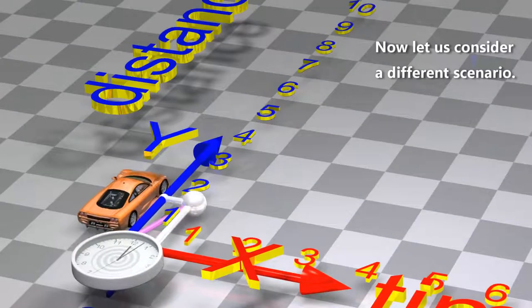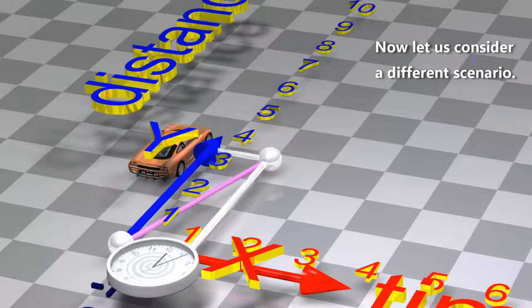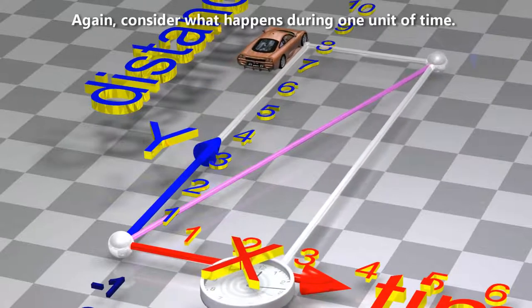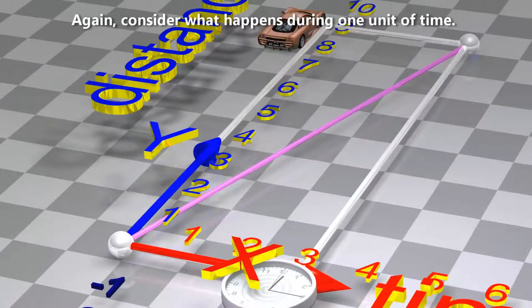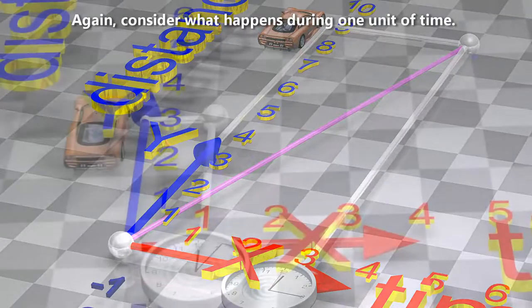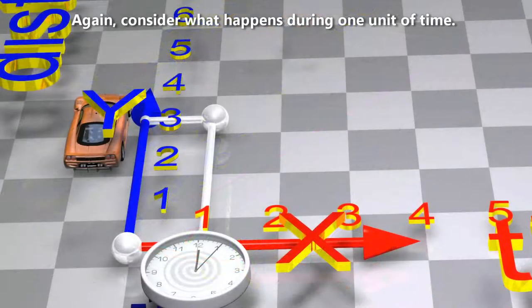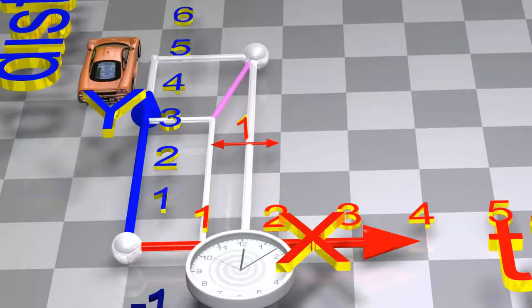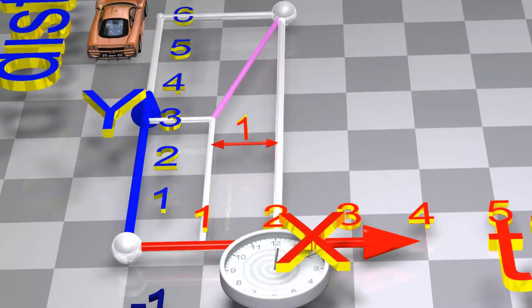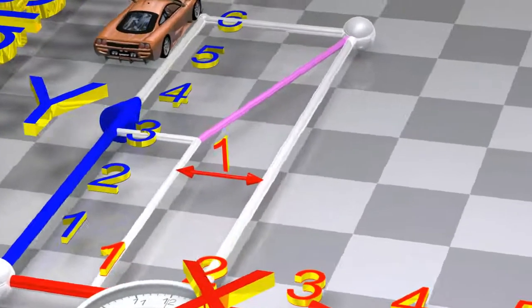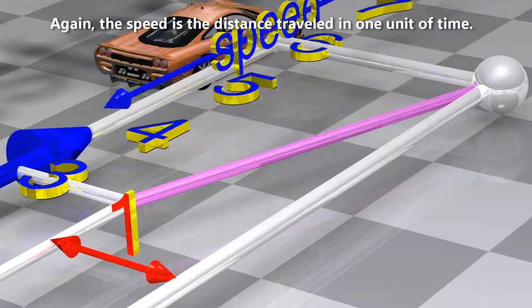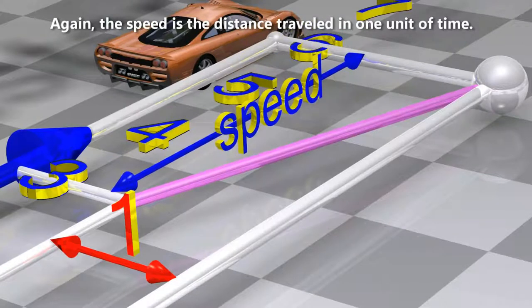Now let us consider a different scenario. Again, consider what happens during one unit of time. The speed is the distance traveled in one unit of time.